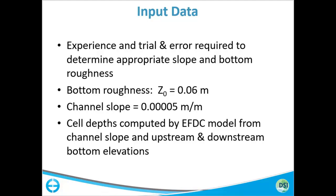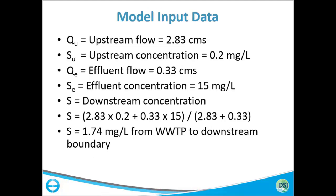The channel slope we are going to use is 0.00005. The only reason we use this slope is to reach steady state as fast as possible. I will show you how to specify these using EFDC Explorer. In the EFDC model, cell depths are computed from the channel slope and upstream and downstream bottom elevations. We will also introduce dye in this example to see the concentration of water coming from the wastewater treatment plant. We will tie dye concentration to the wastewater treatment plant and to the east branch.